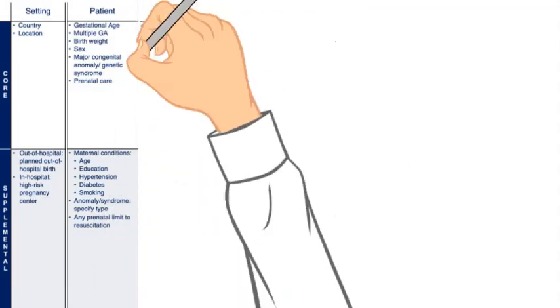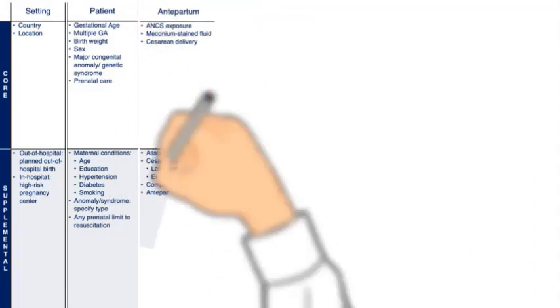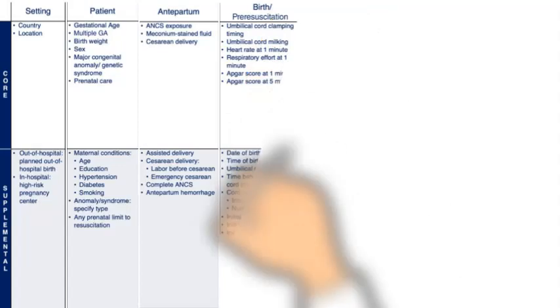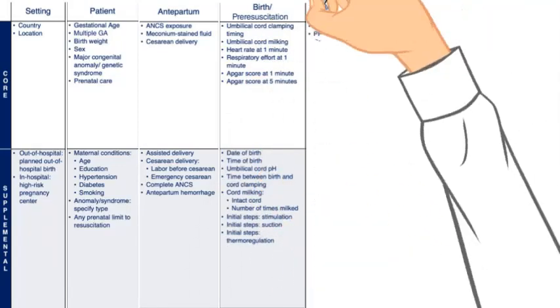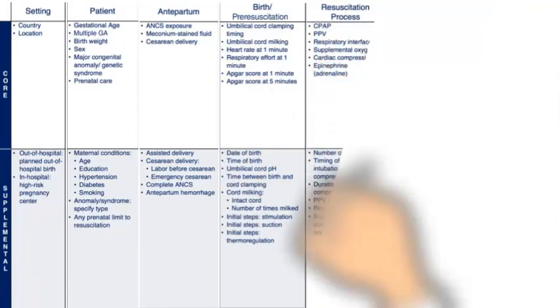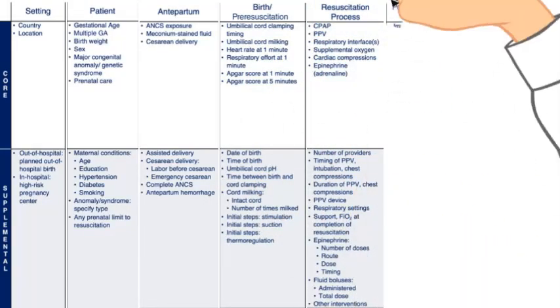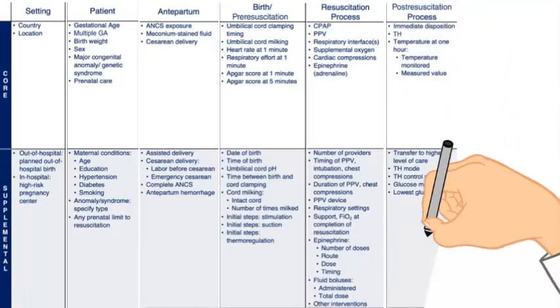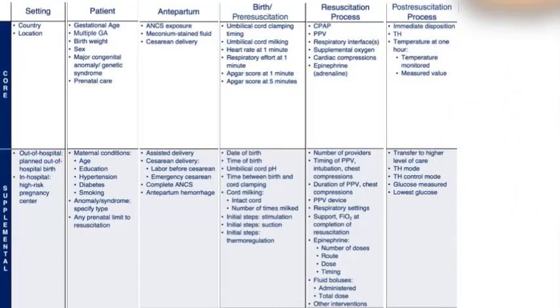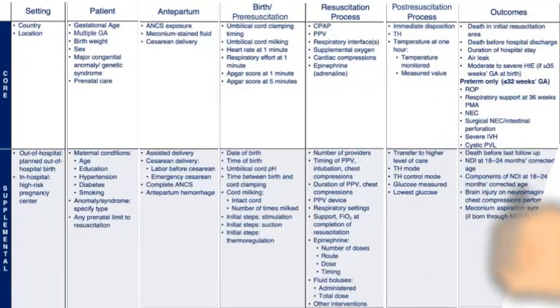Within each domain, data elements were identified either as core or supplemental information. In Utstein-style reporting, core data elements should be collected and reported, while supplemental data elements may be collected and reported using standard definitions.